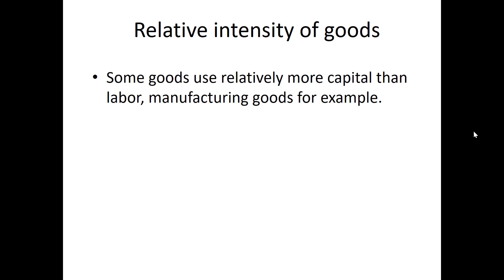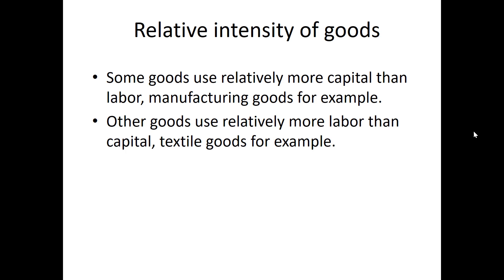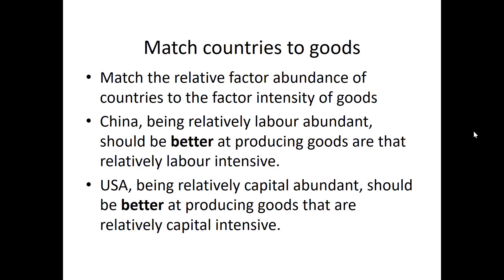Now let's look at goods. Some goods use relatively more capital than labour. Manufacturing goods, for example, typically use a lot of technology and machinery, so they are what we call relatively capital intensive. On the other hand, goods like textiles use relatively more labour than capital, so we classify such goods as relatively labour intensive.